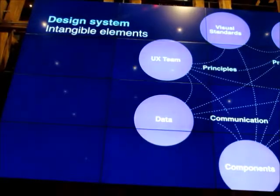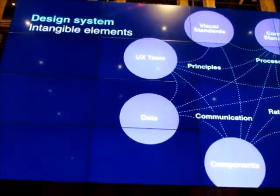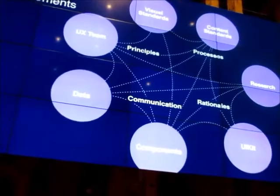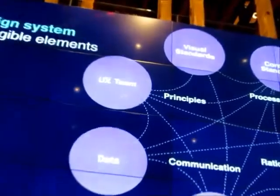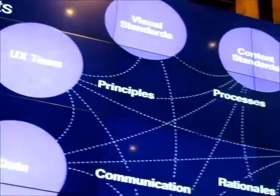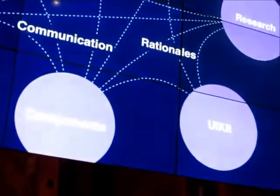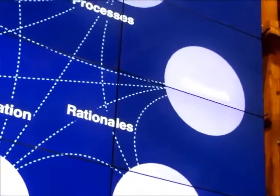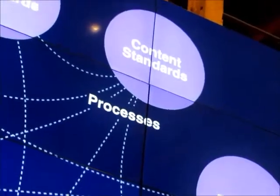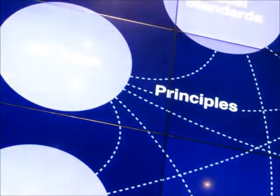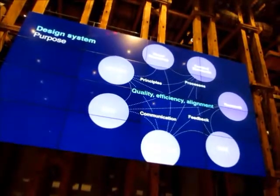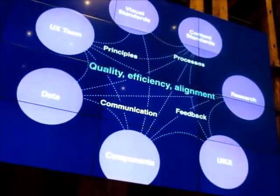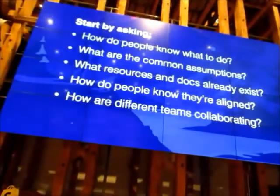Then we have the less tangible parts of our system — the parts that are harder to really understand and hold. These are things like principles. We have some stated design principles, but principles are fairly abstract. If you've worked in design, you sometimes hear people say 'it's not high quality enough,' but when you ask them to define what they mean, they say 'I don't know, but I know it when I see it.' Also the processes we have, the communication between teams, the rationales we use when we speak about our work. All of these things need to pin together to support our purpose: quality, efficiency, and alignment. It can be really hard to know where to start when trying to identify these tangible and intangible elements.